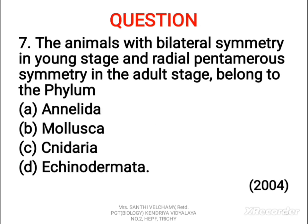Next question: animals with bilateral symmetry in young stage and radial pentamerous symmetry in adult stage belong to phylum A) Annelida, B) Mollusca, C) Cnidaria, D) Echinodermata. The correct answer is D, Echinodermata, because echinoderms have larval forms that possess bilateral symmetry and adults have radial symmetry.